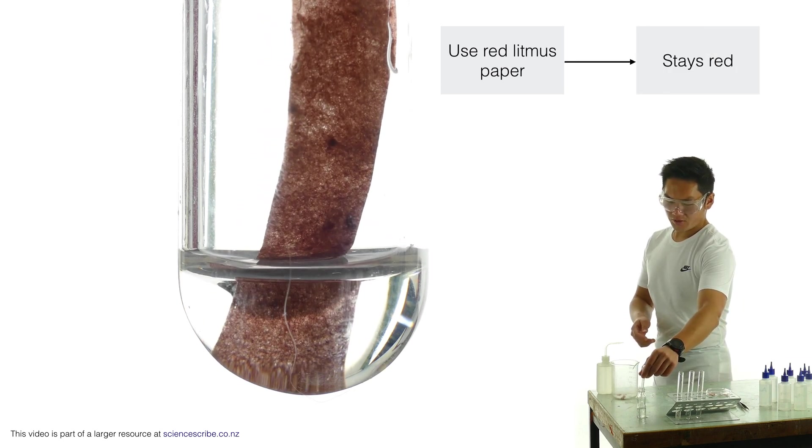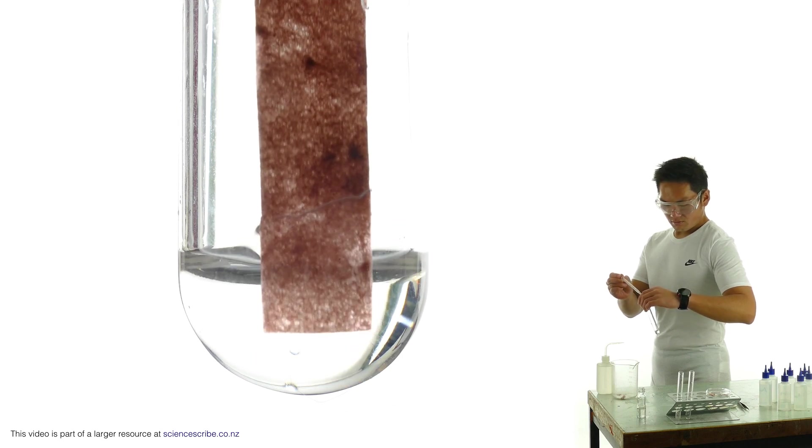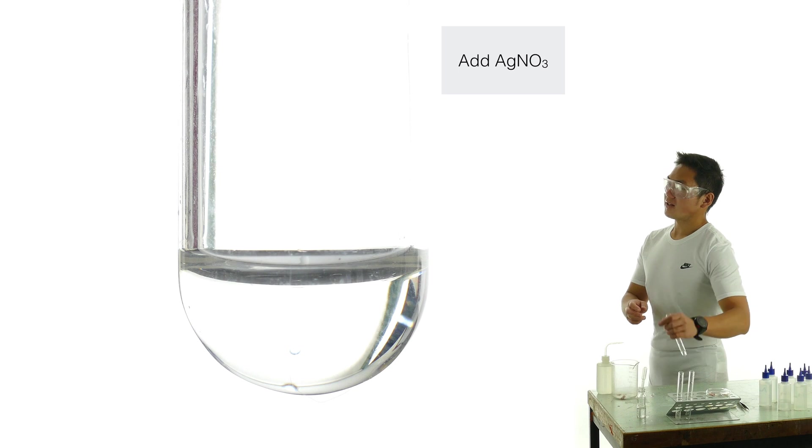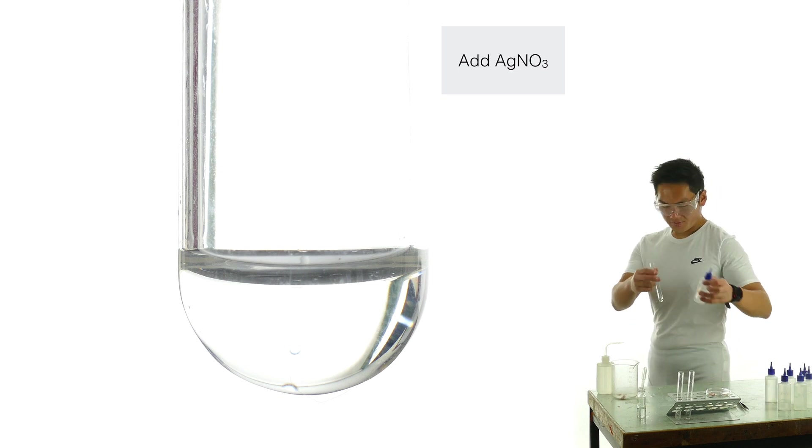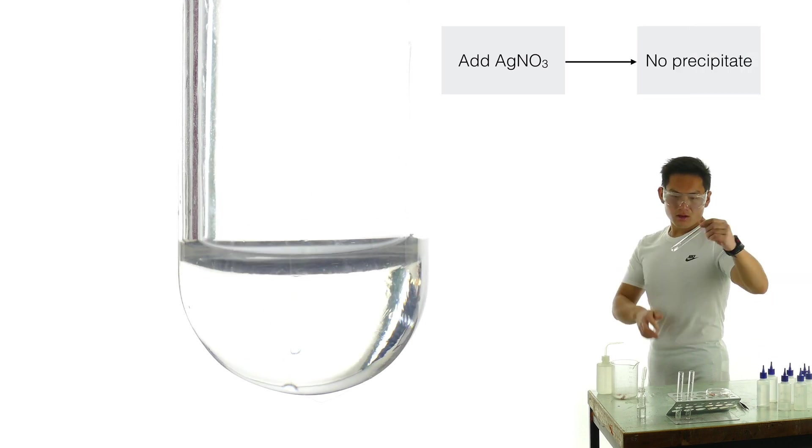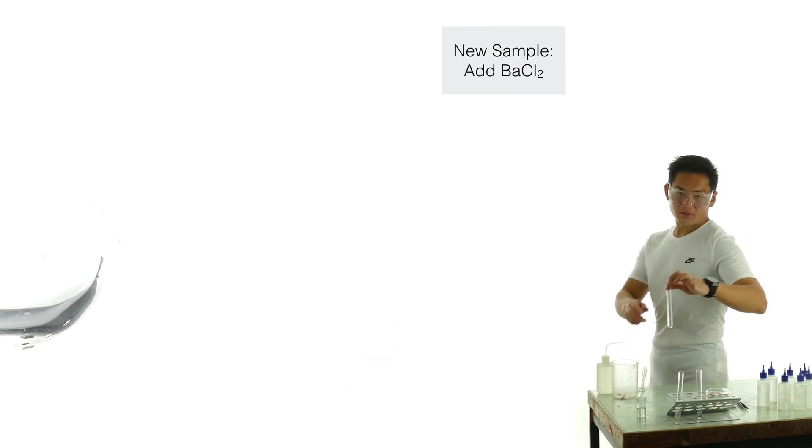I'm going to put some of that into a test tube. And then we're going to add about two to three drops of silver nitrate and see what happens. It looks like it's staying clear and colorless, so I'm going to grab a new sample of that.